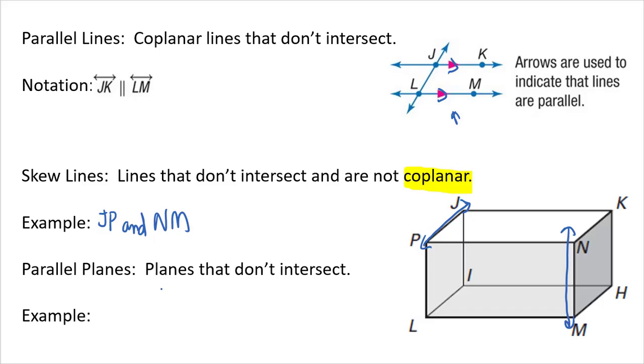Parallel planes are planes that don't intersect. So if you look at this like a box, it's the top and bottom of your box. So I have plane JKNP and I have plane LHML.